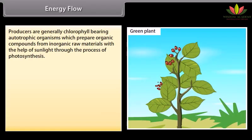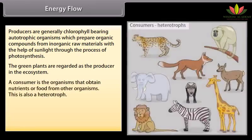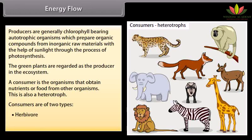Energy flow. Producers are generally chlorophyll-bearing autotrophic organisms which prepare organic compounds from inorganic raw materials with the help of sunlight through photosynthesis. Green plants are regarded as the producers in the ecosystem. A consumer is an organism that obtains nutrients or food from other organisms — also called a heterotroph. Consumers are of two types: herbivores and carnivores.